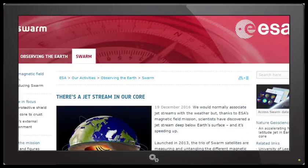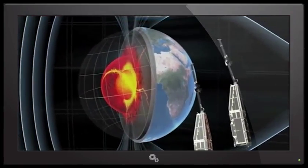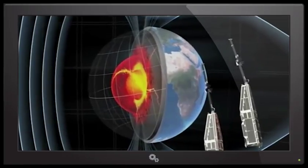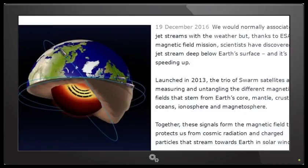We're over at ESA Swarm talking about there's a jet stream in our core, buddy, which is weird. That means the carbon has gotten so bad it has now seeped into the core and is changing the climate in our Earth's inner sphere. Alright, December 19th. That was my birthday. We would normally associate jet streams with the weather.